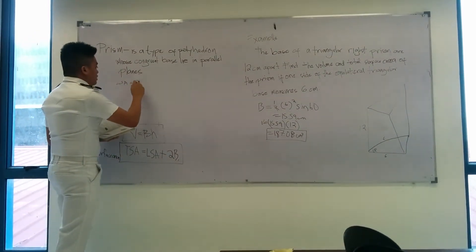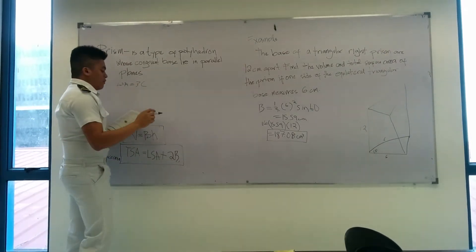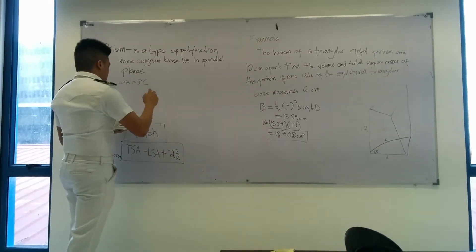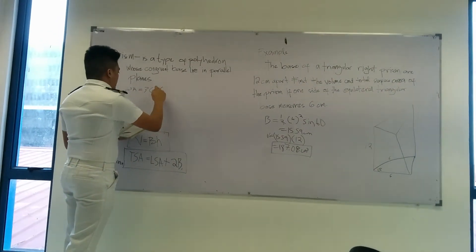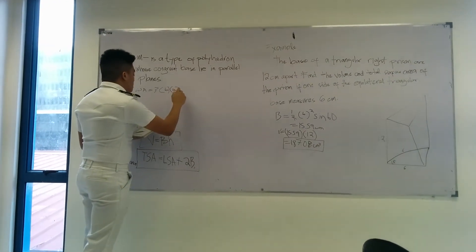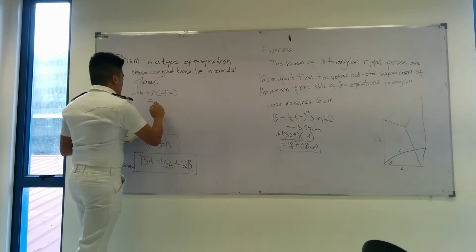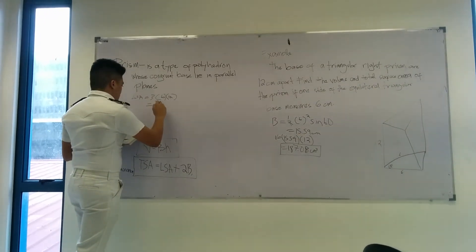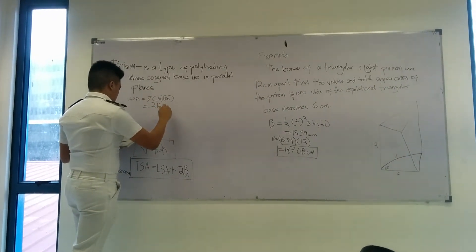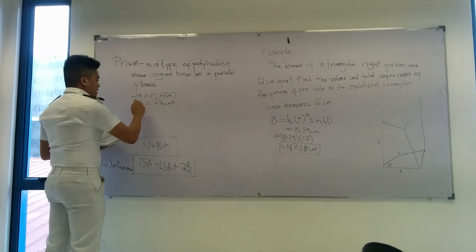There you have one rectangular base. That's 6 times 12 is equal to 216 cubic centimeters. This is the LSA.